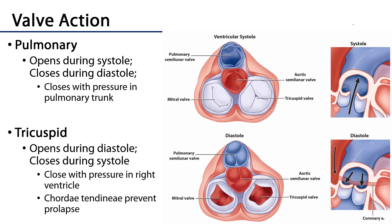In terms of the valves associated with the right ventricle, there's the tricuspid valve with its anterior, posterior, and septal cusps regulating blood in, and then there's the pulmonary valve which regulates blood out of the right ventricle. During systole, the atrioventricular valve — the tricuspid valve — is closed and the semilunar valve is open. During diastole it's the opposite: the tricuspid valve is open and the pulmonary valve is closed.